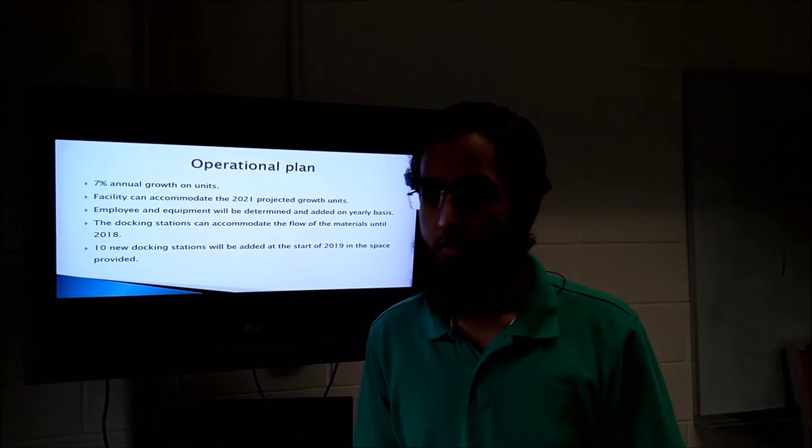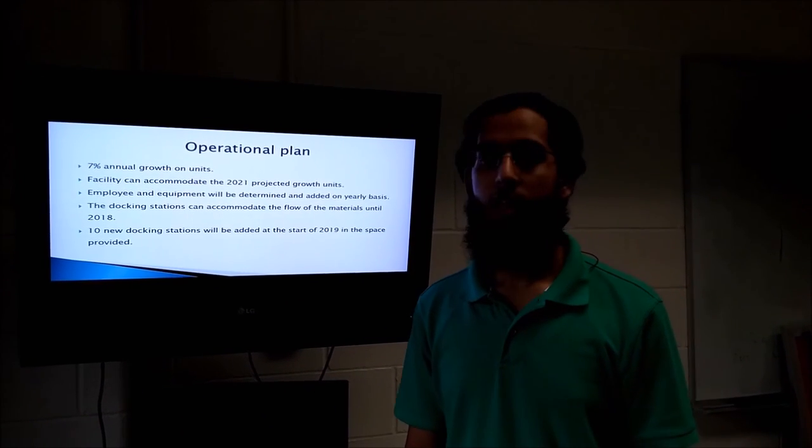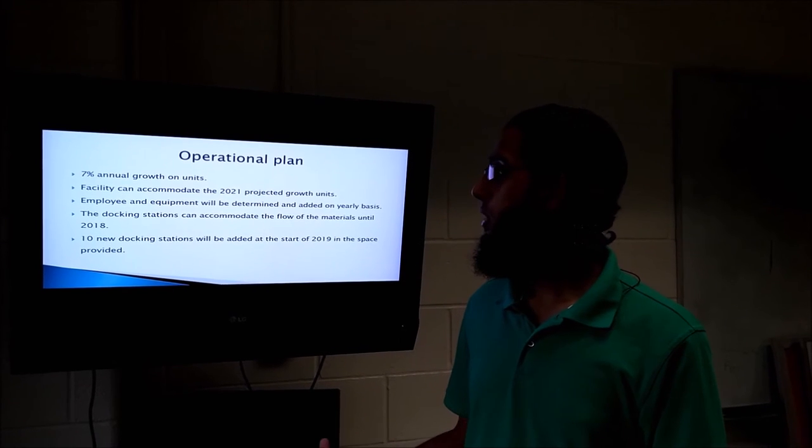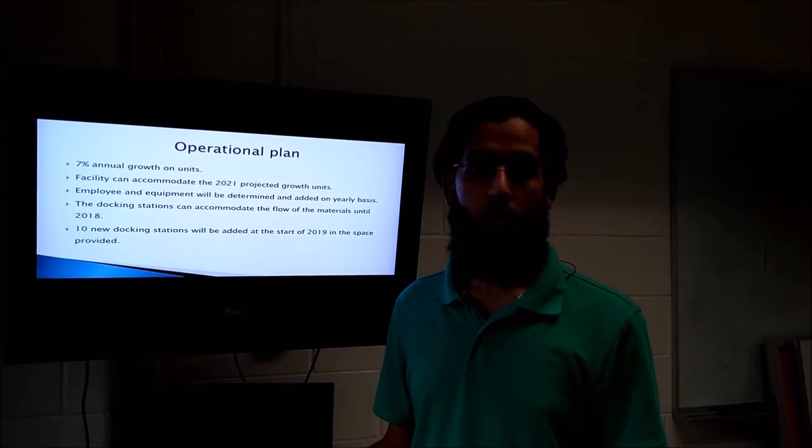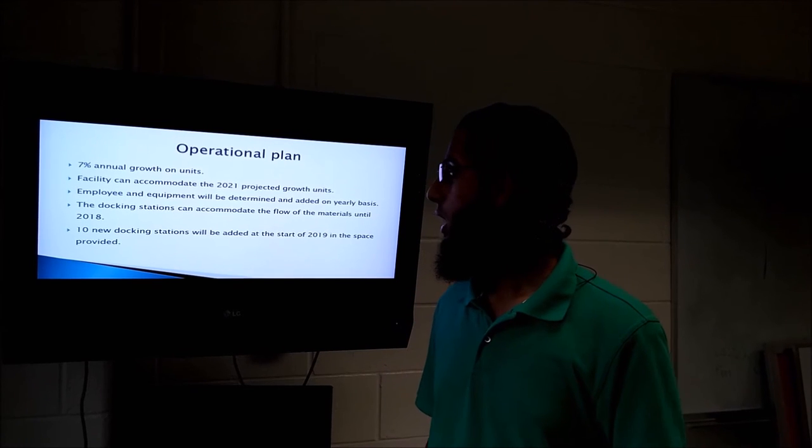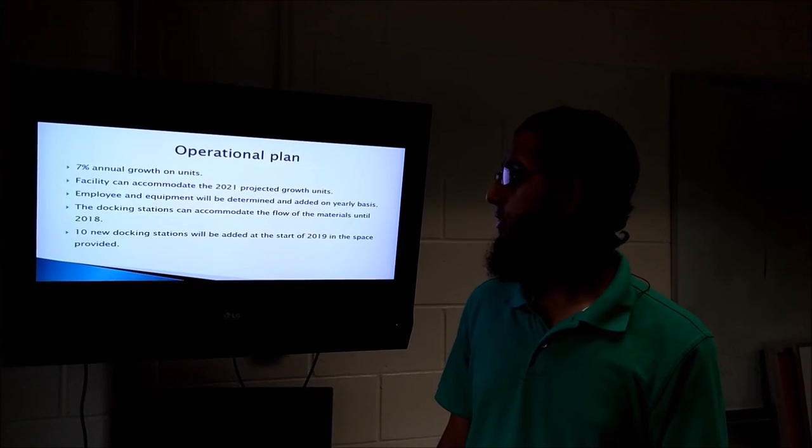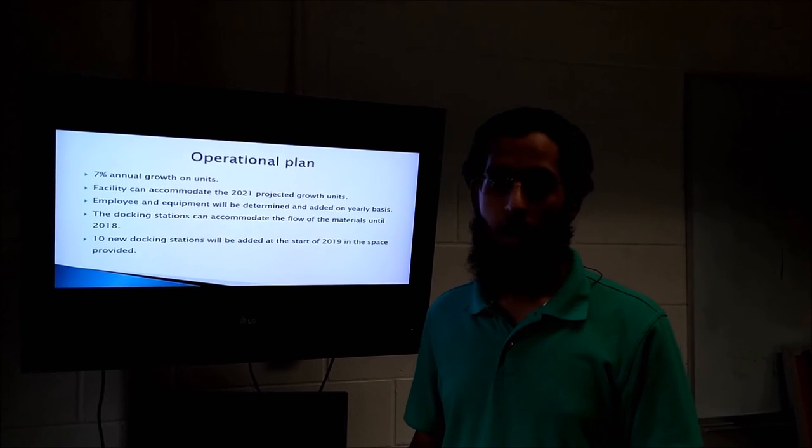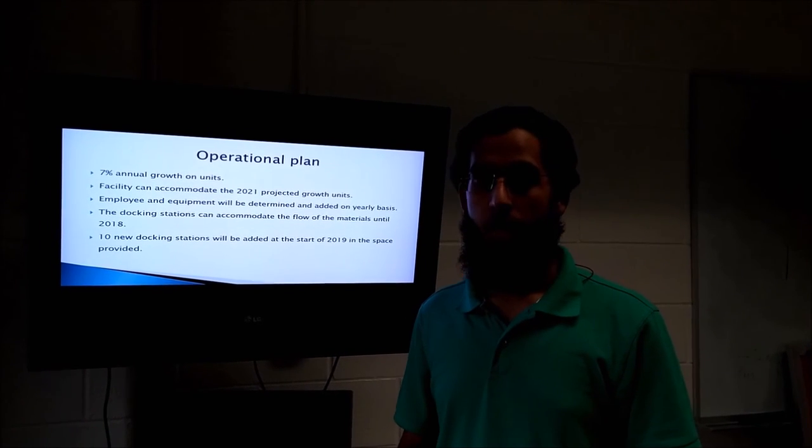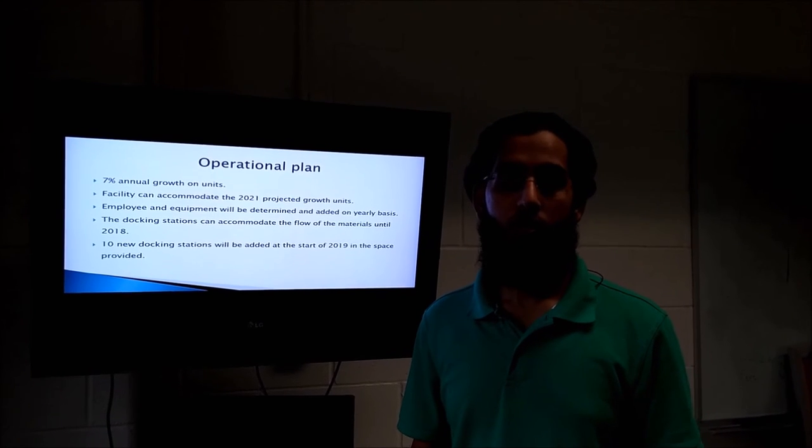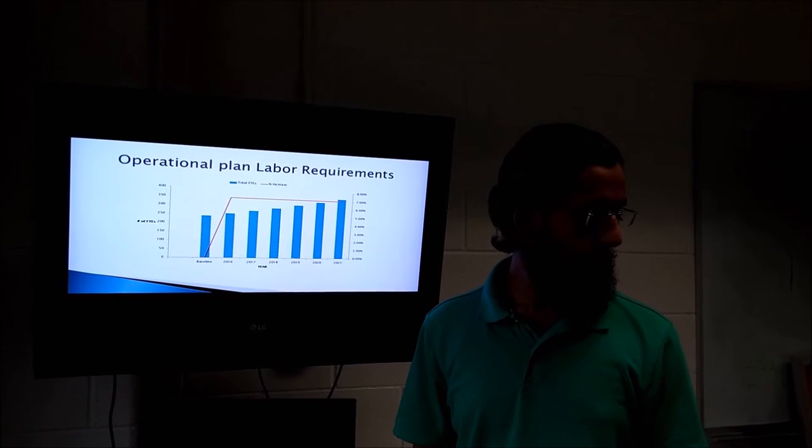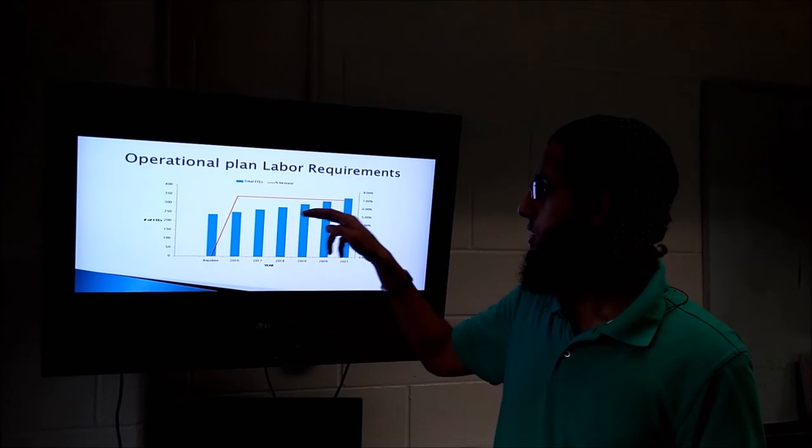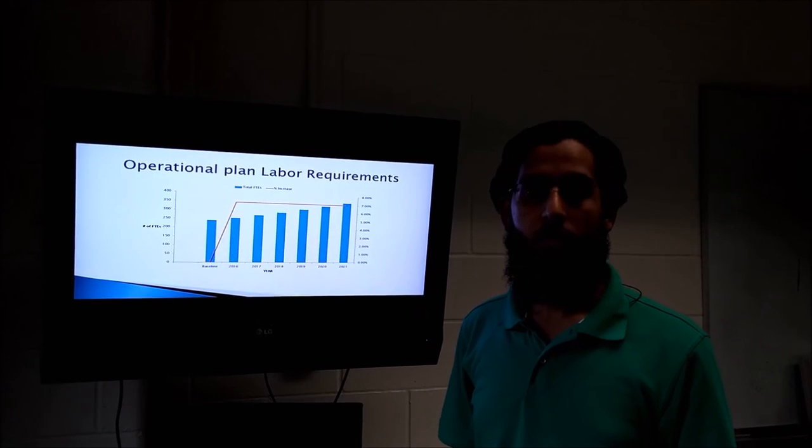The operational plan that we have is based on the data that we were given. For the seven percent growth, our plan is going to easily accommodate our projected growth until 2021. The docking stations that we have—we're going to add 10 more in 2019 because we don't need to start out with 70 docking stations. After 2019, we'll be adding the 10 docking stations to accommodate that growth. For our labor, this is our baseline, and it's a continuous growth until 2021.